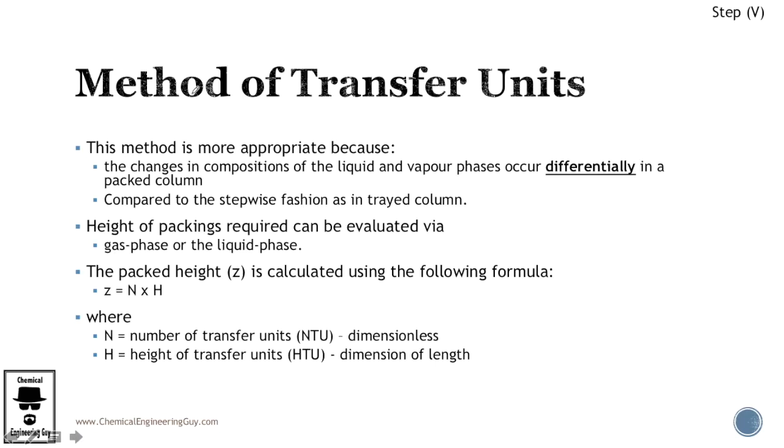So what is this? This is a method because the changes in composition of the liquid and vapor phases occur differentially in a packed column. So as stated before, previously we were talking about stages on the trays which made a lot of sense, especially if you're talking about equilibrium stages and tray stages.